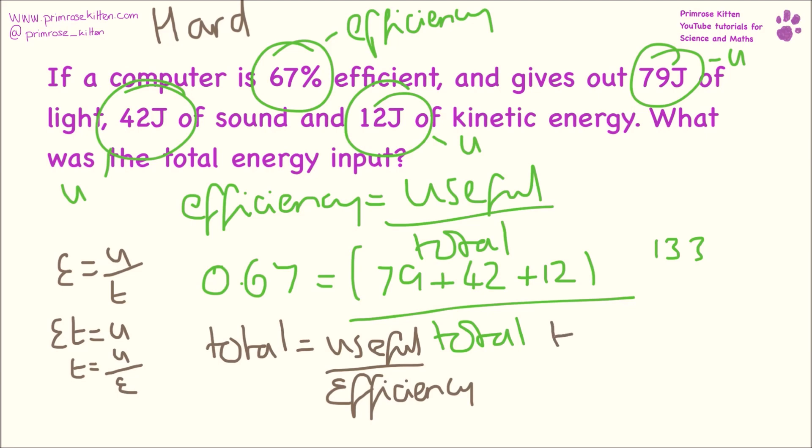Our total is what we're trying to find. Our useful is 133. Our efficiency is 0.67, which gives us a value of 198.5 joules.